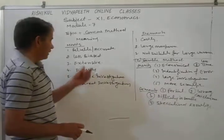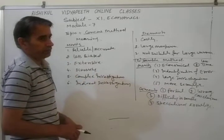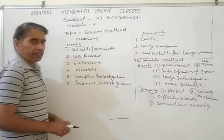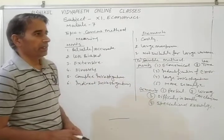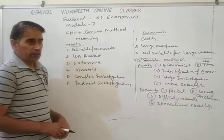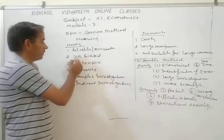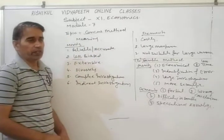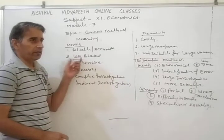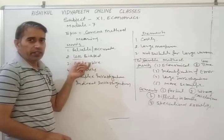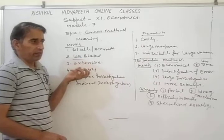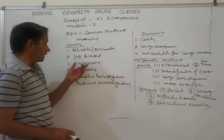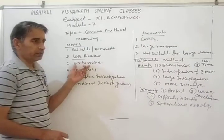The second merit is less biased. Biasness is created when we have options about which item is selected or not selected. But in the census method, we select each and every item, so there is very less chance of biasness because the enumerators choose each and every item in the investigation. So there is no chance of biasness.